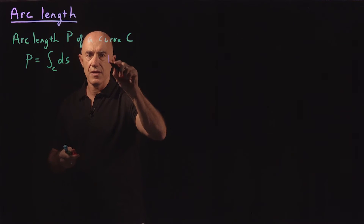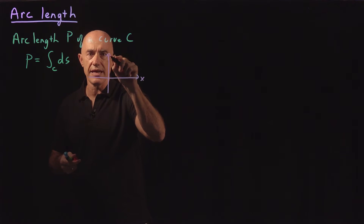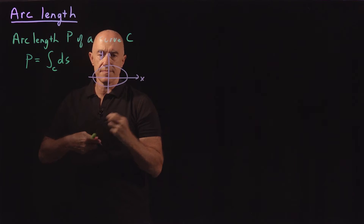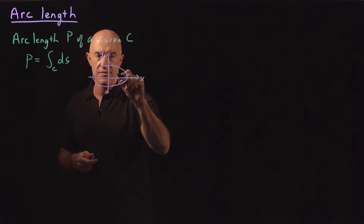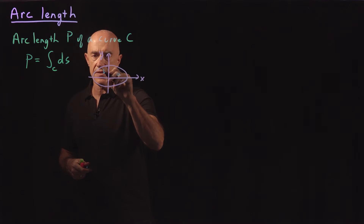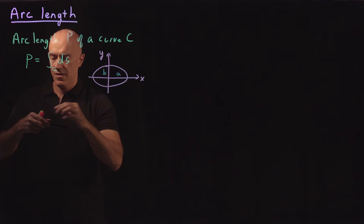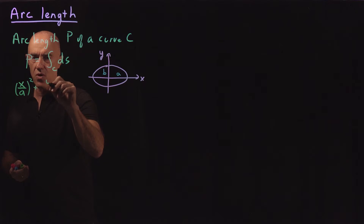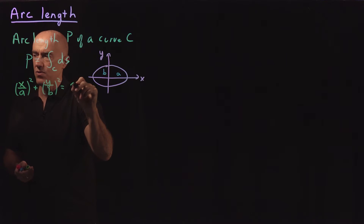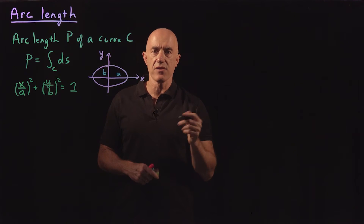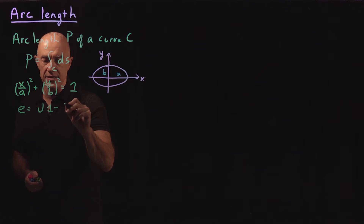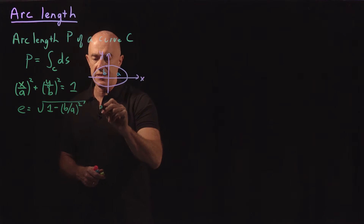We're looking at an ellipse in the xy plane. The major axis will have a length a, and the minor axis will have a length b. The equation for the ellipse is well known: x over a squared plus y over b squared equals 1. There's a number that characterizes an ellipse called the eccentricity e, where e equals the square root of 1 minus b over a squared. Here a is supposed to be larger than b.